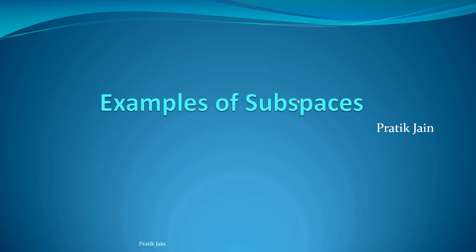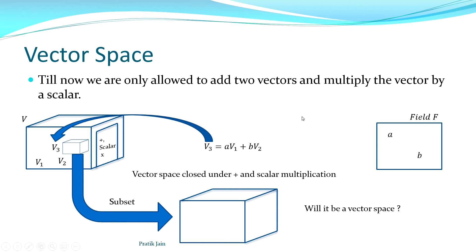In this video we are going to see examples of subspaces. In the previous videos we saw what a vector space is. A vector space is a set of vectors where if you take any two vectors v1 and v2 and form a linear combination — multiplying the first by scalar a and the second by scalar b, where a and b come from a field F — the result v3 also lies in the vector space. This is known as the vector space being closed under addition and scalar multiplication.